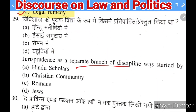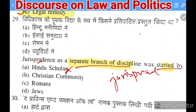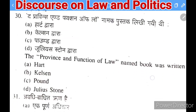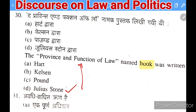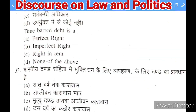Next question: who wrote the book 'The Province and Function of Law'? Options: Hart, Kelsen, Pound, or Julius Stone. The right answer is Julius Stone. Next question: a time-barred debt is — a perfect right, imperfect right, right in rem, or none. A perfect right is enforceable while an imperfect right is non-enforceable. A time-barred debt is not enforceable, so the correct answer is imperfect right.